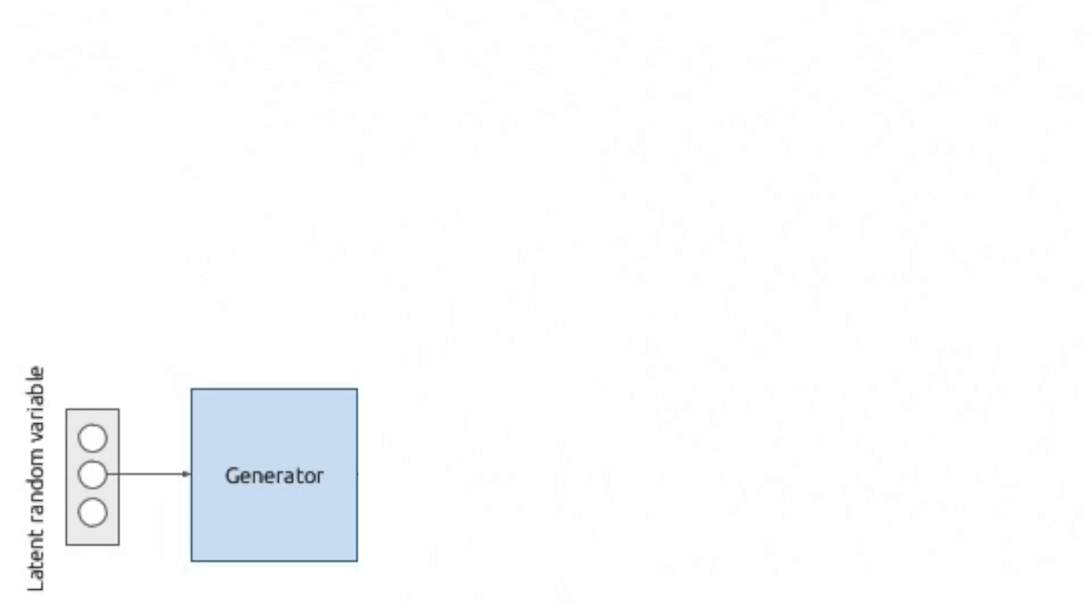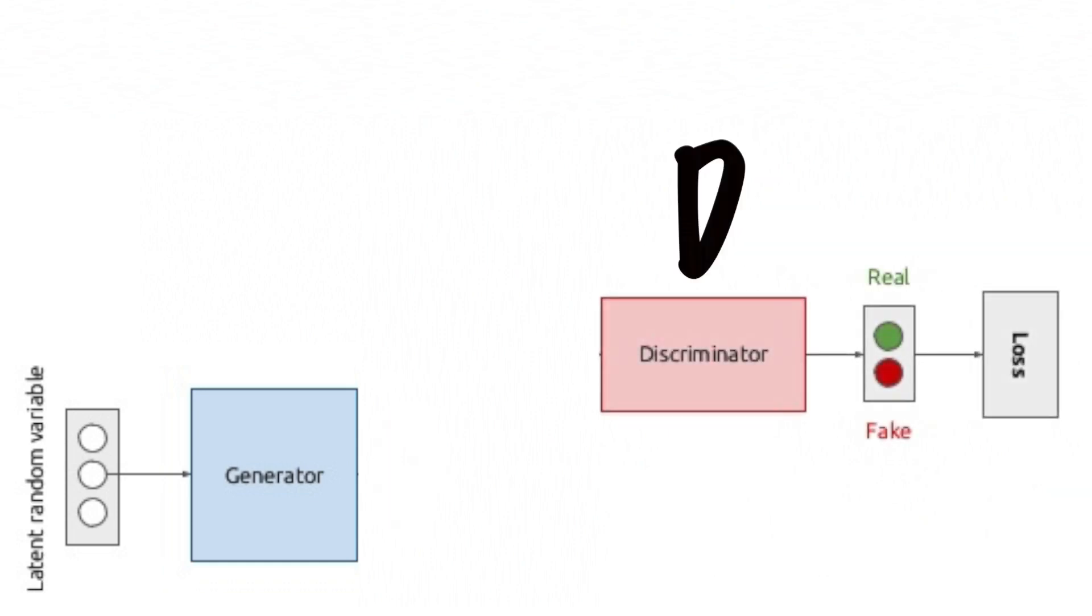Bi-GANs, Cycle-GANs, W-GANs, there's a lot. So, the basic idea here is that we have two neural nets. One is called the generator, G, and the other is called the discriminator, D.